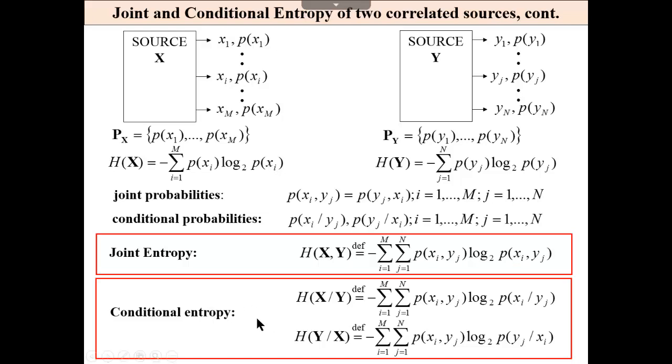Knowing the conditional probabilities and the probabilities of individual sources, we may calculate the joint probability and we can calculate the joint entropy and conditional entropies. This is joint entropy of both correlated sources. And these are conditional entropies of x if y, of y if x.